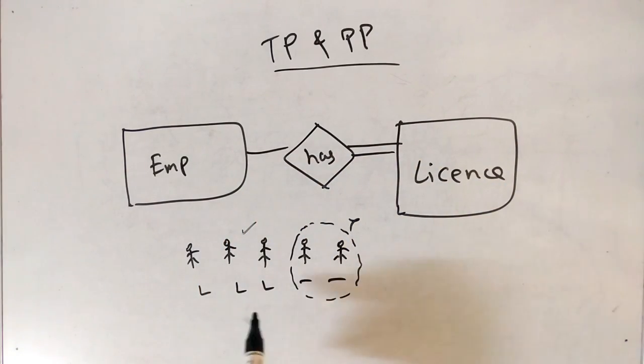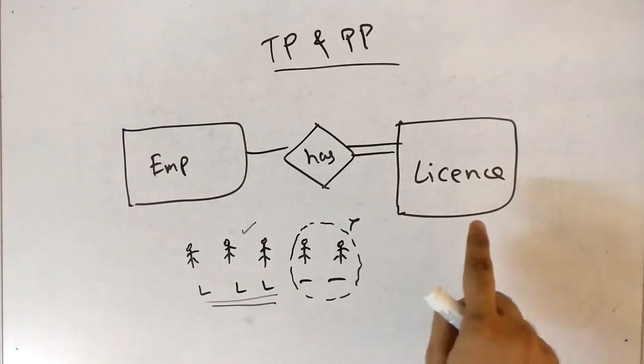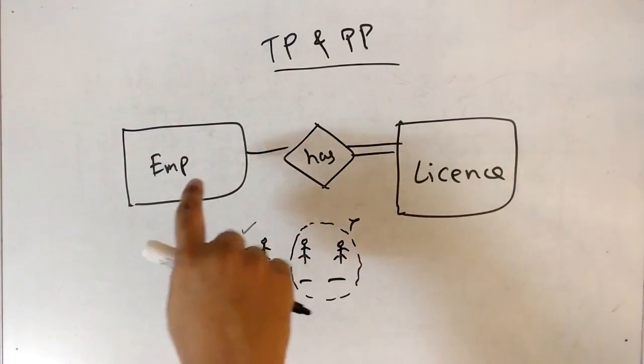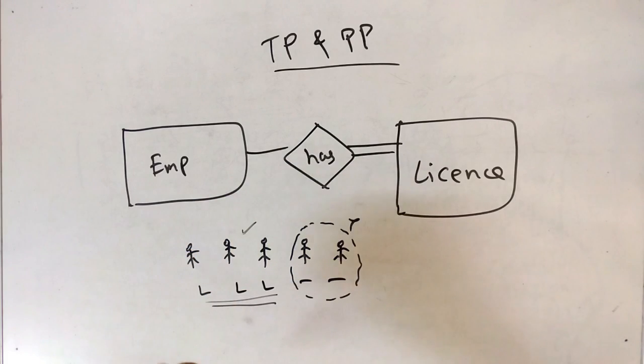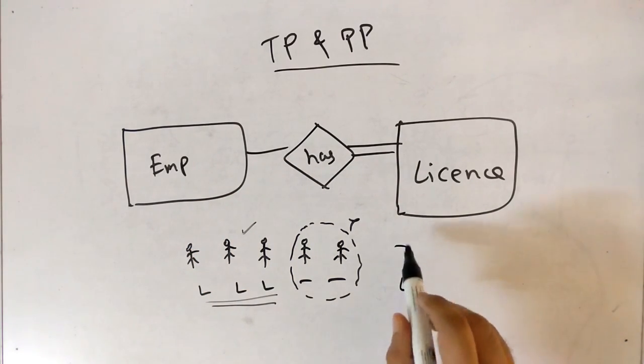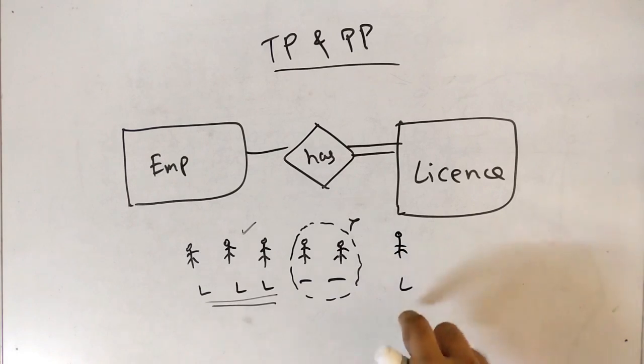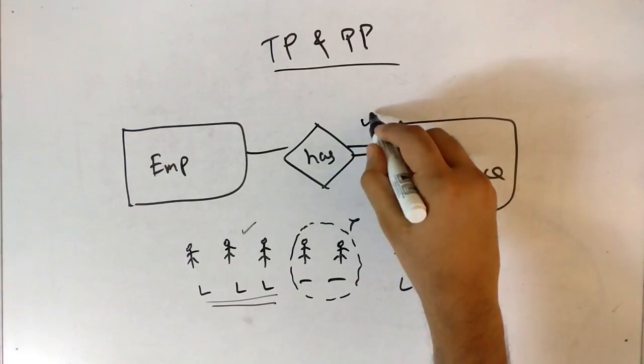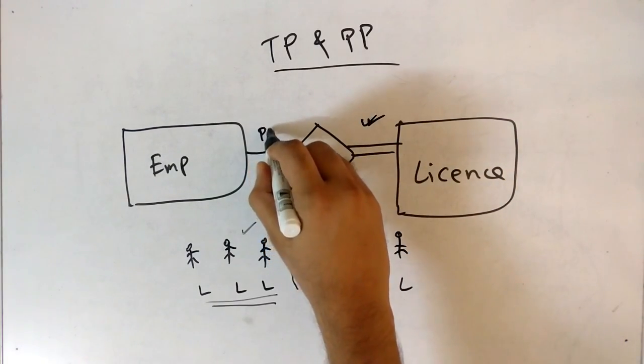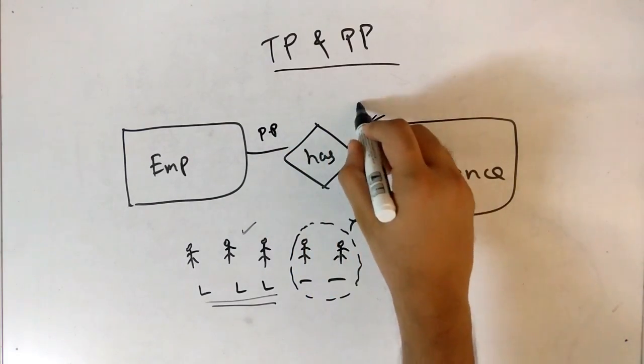Let's talk about license. See, there are three license present. If there is a license, this means there is an employee. It cannot be like we have license and we don't have employee. If there is a license, there is a respective employee for that. So there is a total participation. Now this is partial participation. This is a total participation.